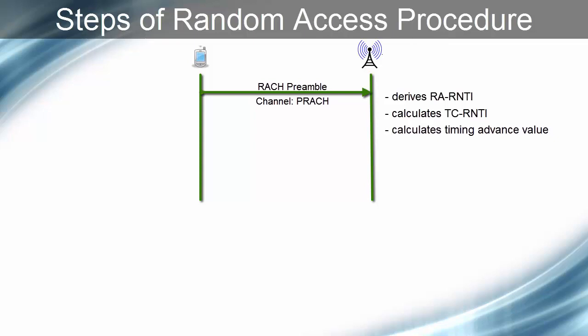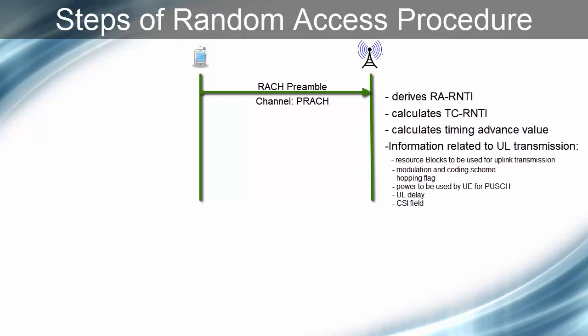This information includes resource blocks to be used for uplink transmission, modulation and coding scheme, hopping flag, power used by UE for PUSCH, uplink delay, and CSI field. The eNodeB includes all above information in the Random Access Response message and sends this RAR message to the UE. UE receives this message on the downlink shared channel. For this purpose, the PDCCH message is addressed by RA-RNTI for that UE.